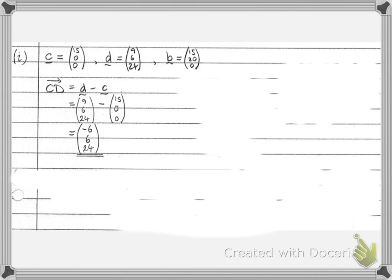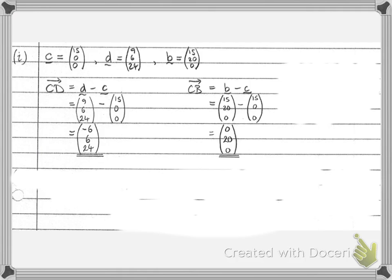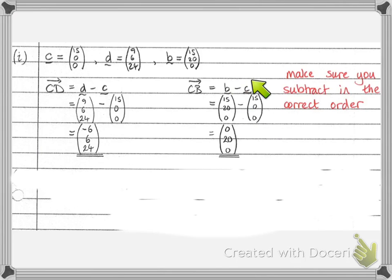We do a similar thing to find the vector CB. So we do B minus C, which was 15, 20, 0, minus 15, 0, 0, giving us 0, 20, 0. And again, the answer is written as a vector. If you were to do, instead of B minus C, if you did C minus B, you would have got 0 minus 20, 0, which would be the vector BC instead of CB. You've got to make sure you get them in the correct order. It's the second one minus the first one. So it's C to B, B minus C.